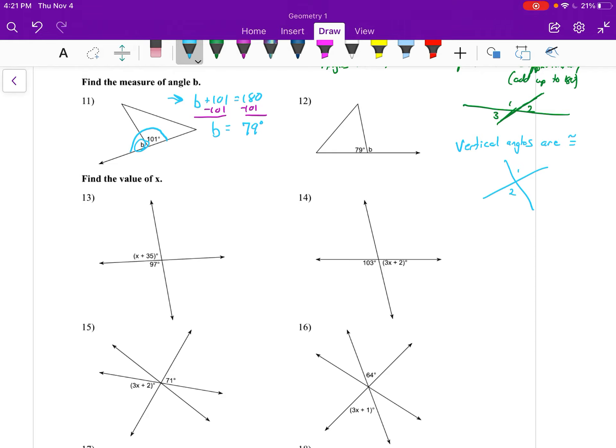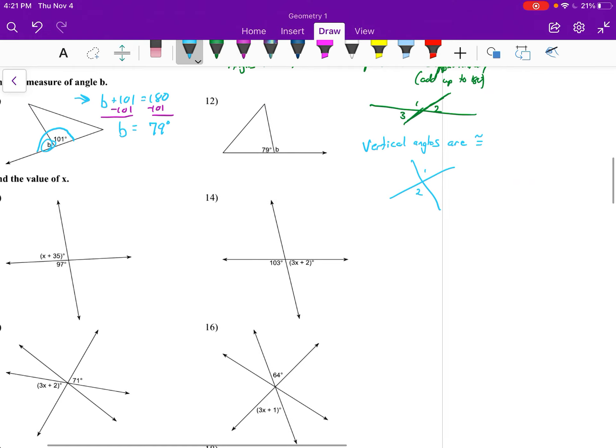Number 12, let's see if we can squeeze this in somewhere. This is actually just 79 plus b is equal to 180. We would subtract 79 from both sides and we get b is 101.